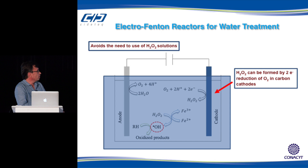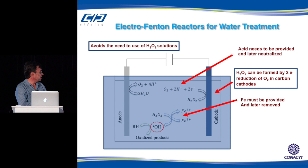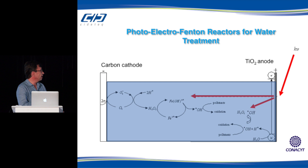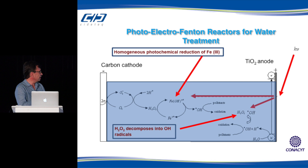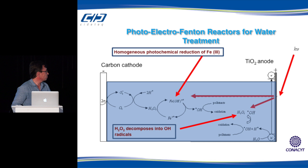There is an electrochemical approach in which hydrogen peroxide can be generated in situ by the two-electron reduction of oxygen in solution using carbon cathodes. This reaction also requires a relatively acidic medium and iron in solution. If we assist this process with UV light using a titanium dioxide anode, we can generate charge carriers—electrons and holes. The holes can oxidize water to produce more hydroxyl radicals, and UV light can regenerate iron from Fe³⁺ to Fe²⁺ or decompose hydrogen peroxide into hydroxyl radicals. This is the photoelectro-Fenton reaction.